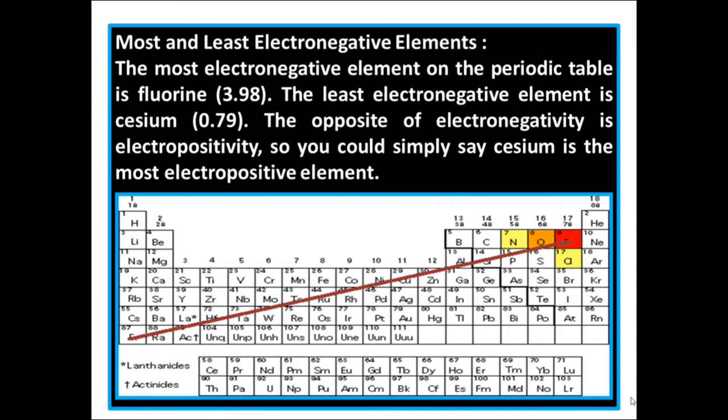Observe the diagram. Most and least electronegative element. The most electronegative element on the periodic table is fluorine, 3.98. The least electronegative element is caesium, 0.79. The opposite of electronegativity is electropositivity.